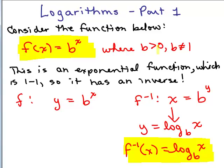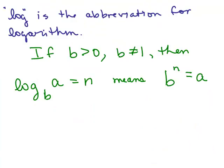It's still true that b has to be greater than 0 and b is not equal to 1. Okay, let's summarize. Log is the abbreviation for logarithm. If b is greater than 0 and b is not equal to 1, then this statement, which we read as log of a base b equals n, is the same as this equation: b to the n equals a.